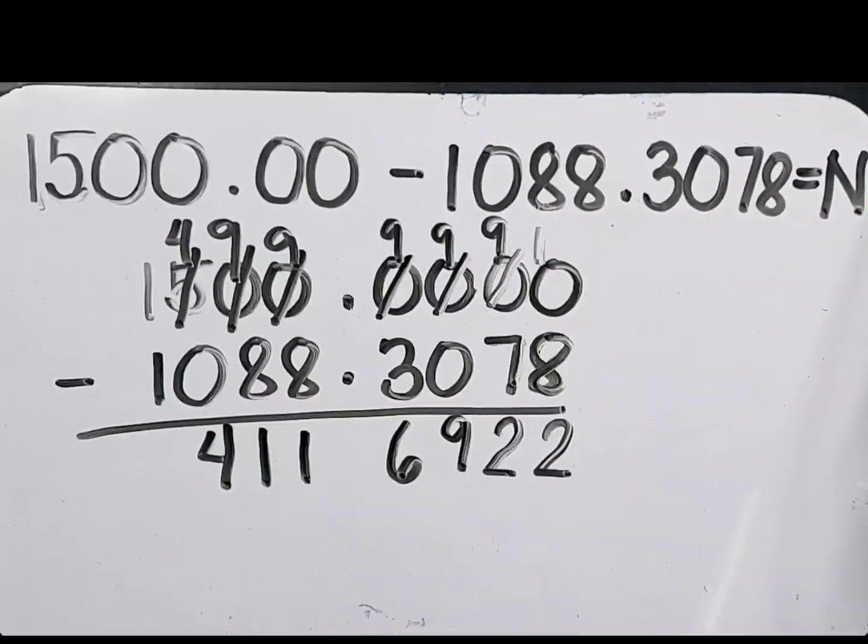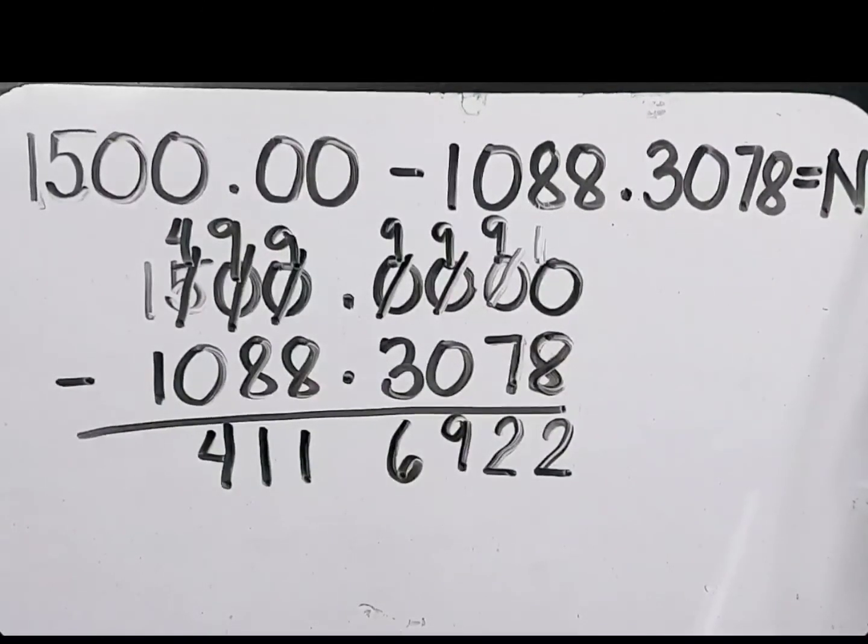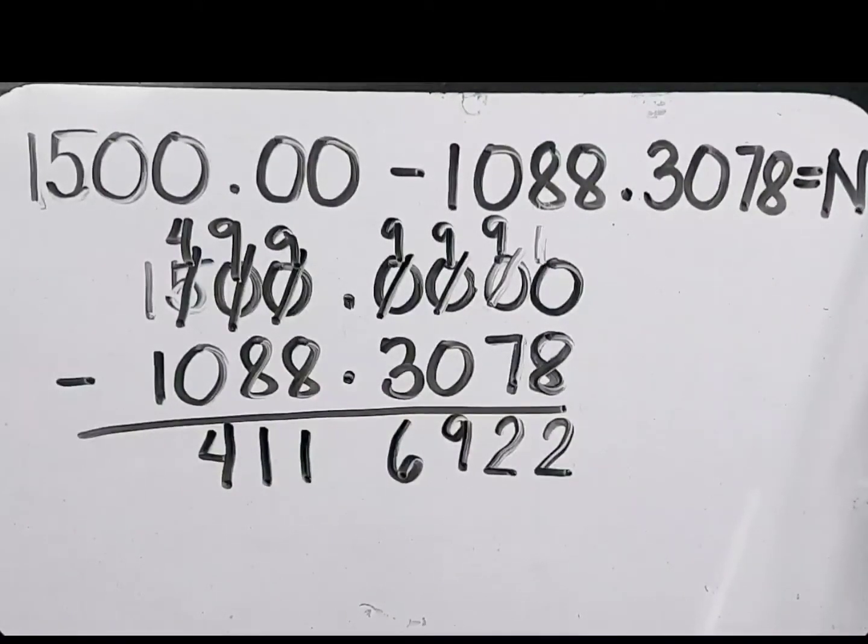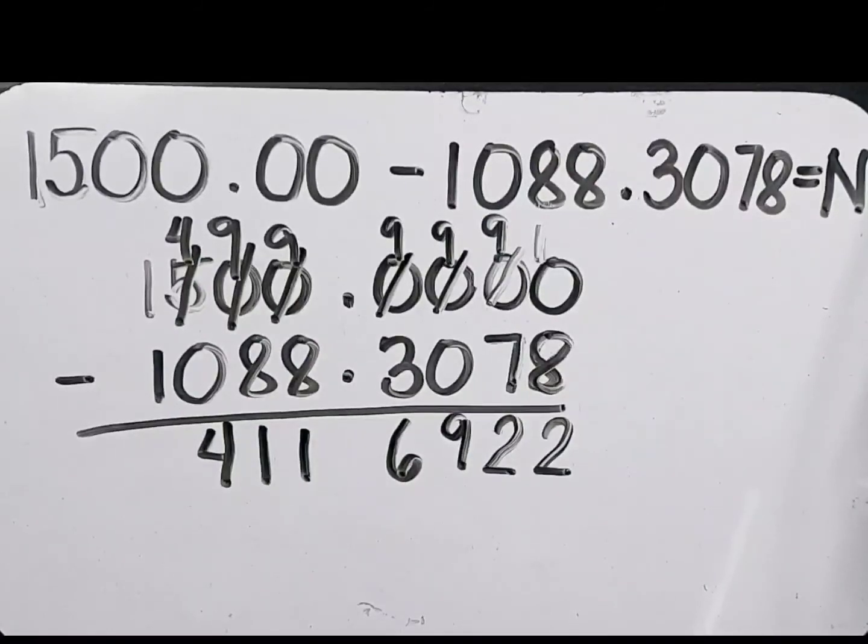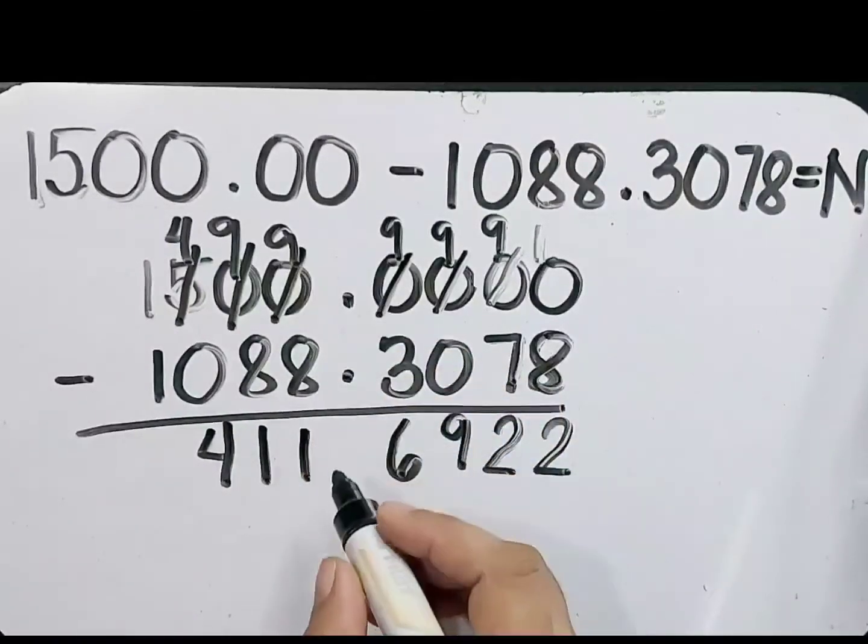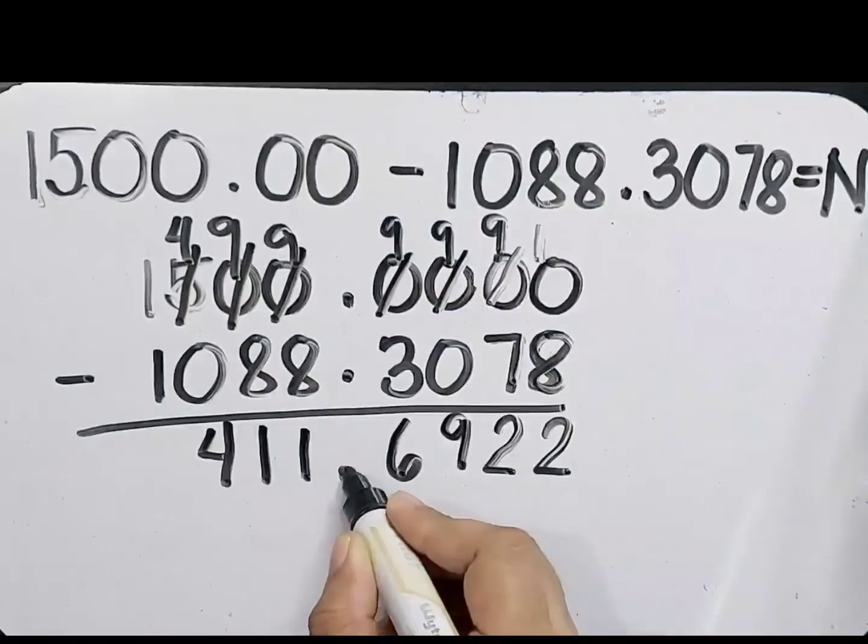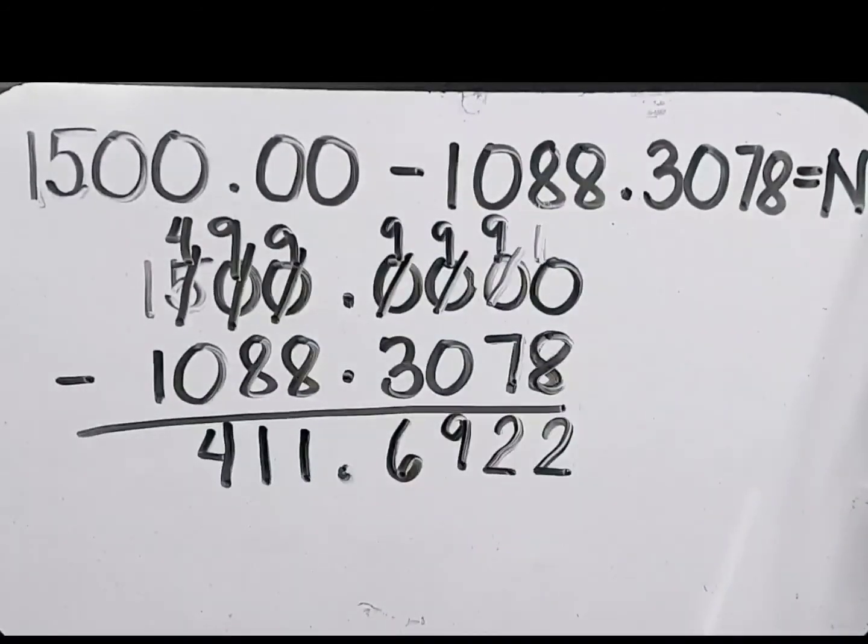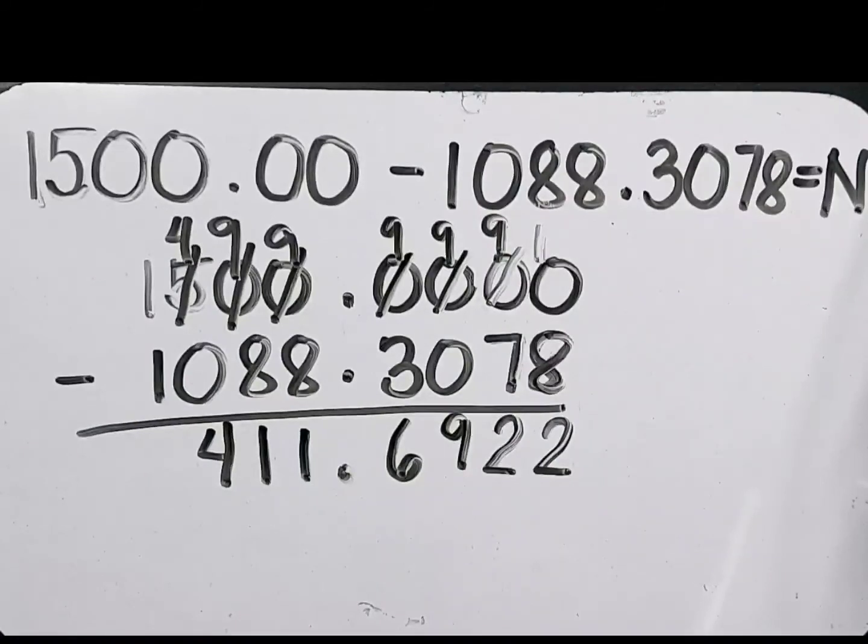Now let's place the decimal point in the difference. Align this with the decimal points of the minuend and the subtrahend. So this is the decimal point. Let's just copy and align it to the minuend and subtrahend. Our final answer is 411.6922.